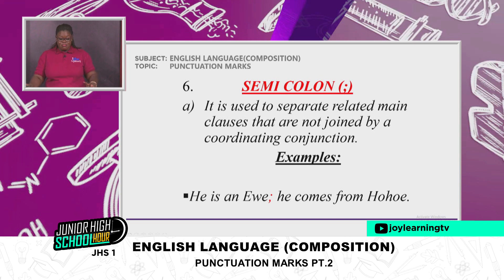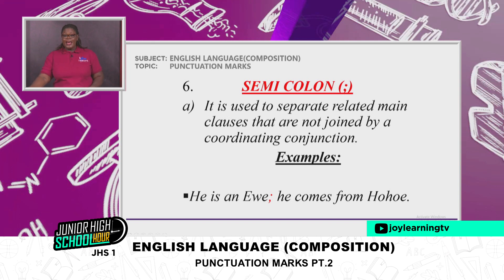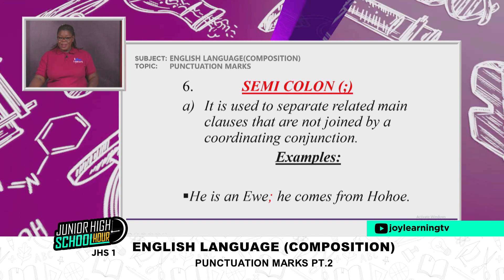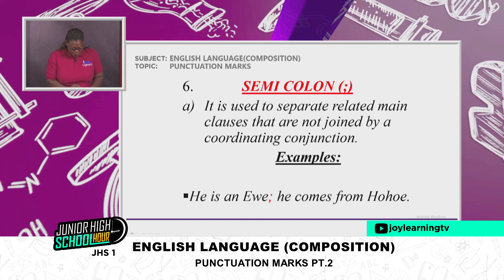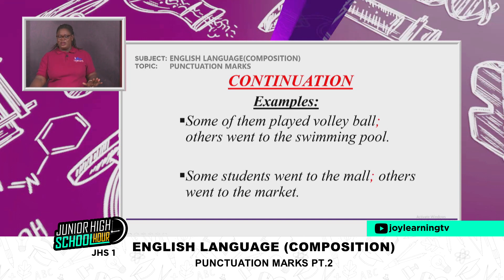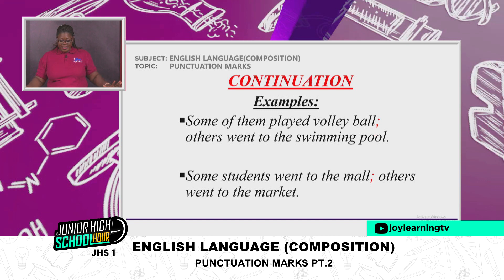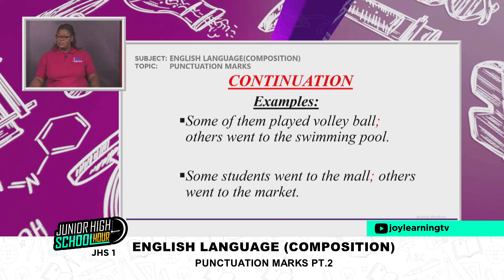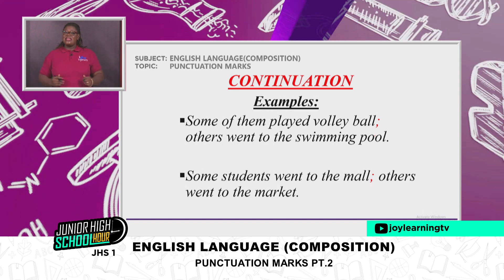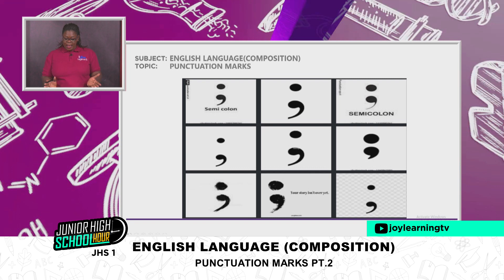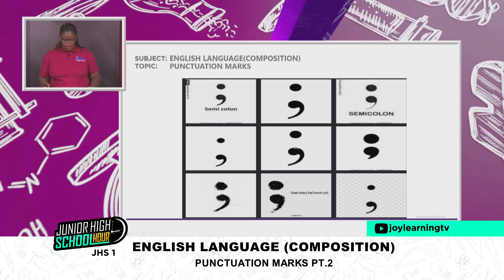The semicolon is used to separate related main clauses that are not joined by a coordinating conjunction. Examples: 'He is an Ewe; he comes from Hohoe.' 'Some of them played volleyball; others went to the swimming pool.' 'Some students went to the mall; others went to the market.' That is the semicolon for you.